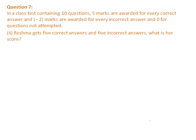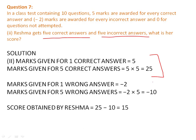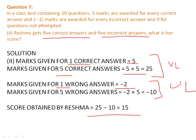Let's see another case of the same question. Reshma gets 5 correct and 5 incorrect. What is her score? Again we apply unitary law for correct questions and for incorrect answers, then combine. For 5 correct: 5 × 5 = 25. For 5 incorrect: 5 × (−2) = minus 10. Combining: 25 + (−10) = 15 marks.